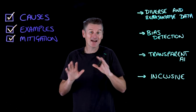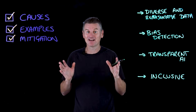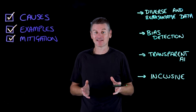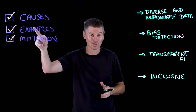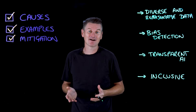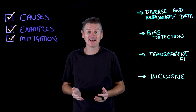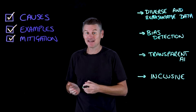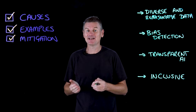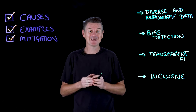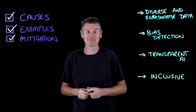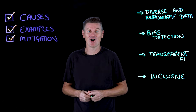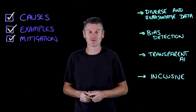The fact is that algorithmic bias has many causes. And as AI becomes more prevalent in decision-making, the importance of detecting and mitigating these biases only grows.